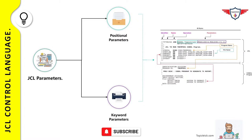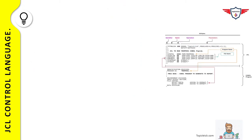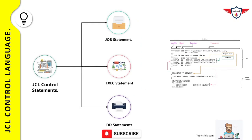Keyword parameters have no special position or order. However, they follow any required positional parameters within a job statement. For example, the keyword parameters MSGCLASS and MSGLEVEL are coded after the positional parameters — accounting information and username. Always remember that a keyword parameter is always followed by an equal sign and a value. In this example, MSGCLASS and MSGLEVEL are the two keyword parameters used in the job statement.